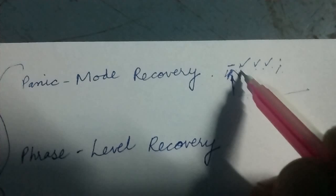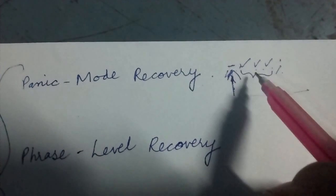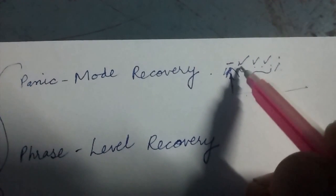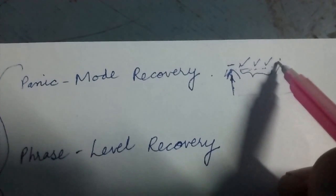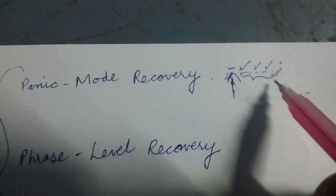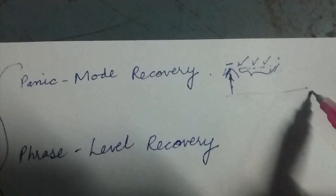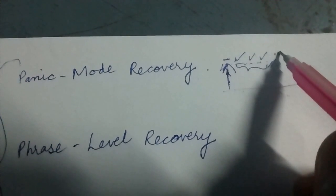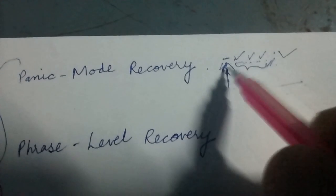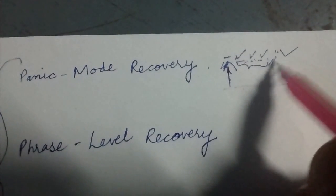Suppose this statement is erroneous. What we do is we keep on reading the input and discarding it till we get a semicolon, because after it we will get a fresh statement which is correct. This is called the panic mode recovery - just discard the input till you get a synchronizing symbol.